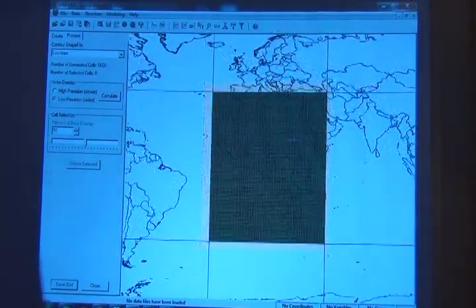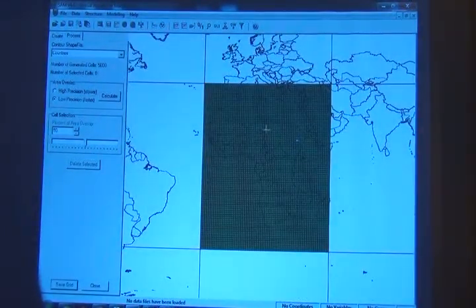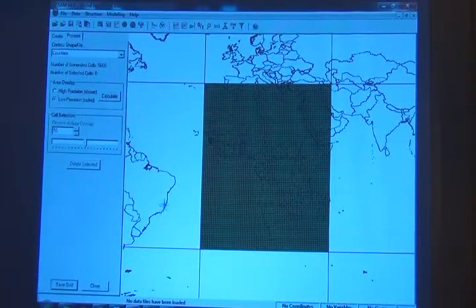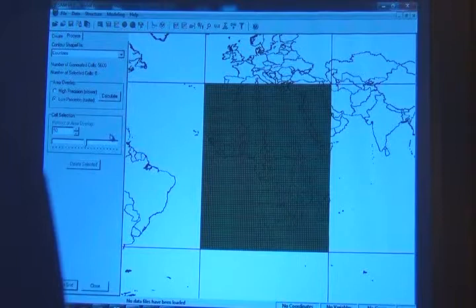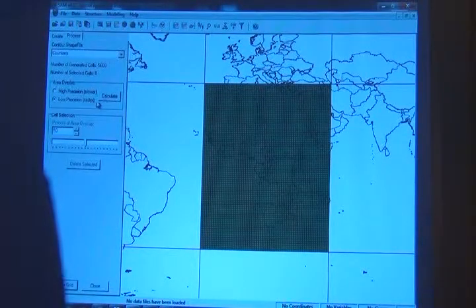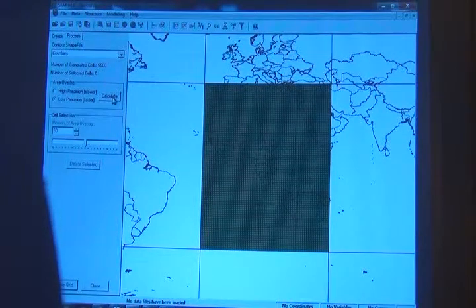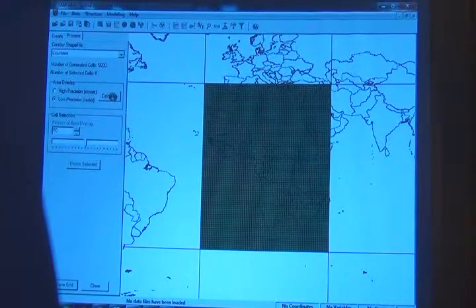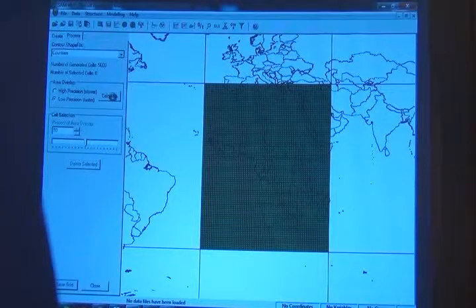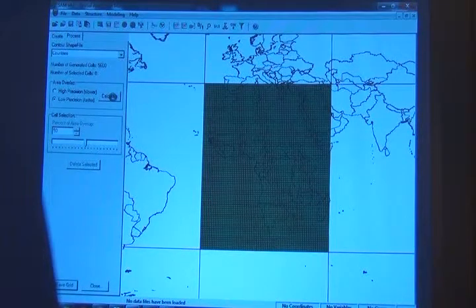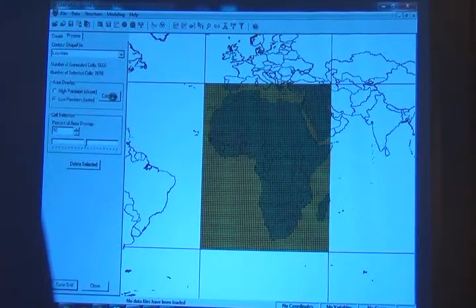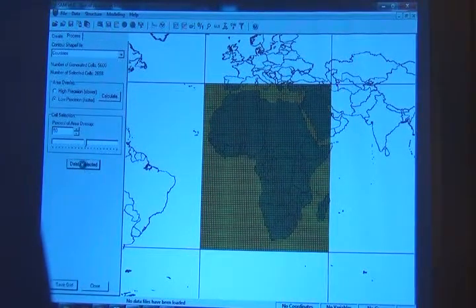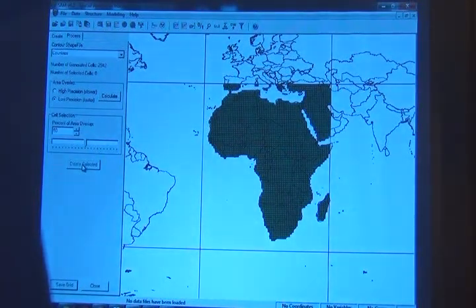And now we want to remove cells that are falling in the Atlantic, falling in the ocean. Sometimes it works, sometimes it doesn't. You can click calculate. It's going to take a couple seconds hopefully. There it is. Now we can just delete these cells.